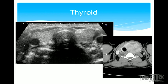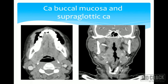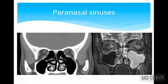A large multinodular goiter appears heterogeneous on CT. A pleomorphic adenoma of the parotid gland appears as a well-defined solid lesion on ultrasound and has a characteristic MRI appearance. For head and neck malignancies — such as buccal mucosa cancer and supraglottic cancer — CT is preferred over ultrasound for local staging.